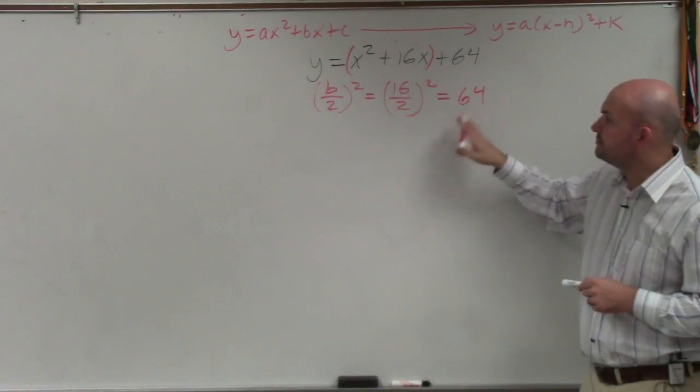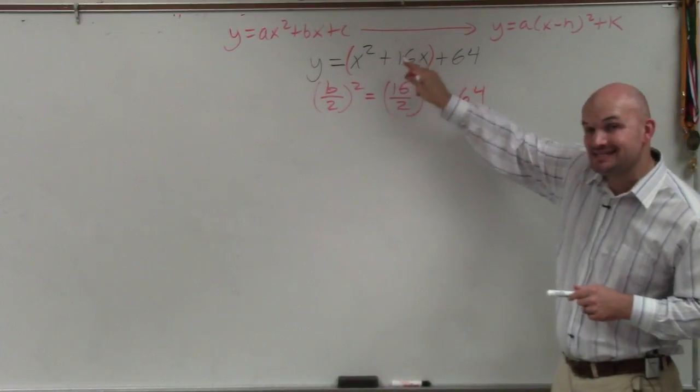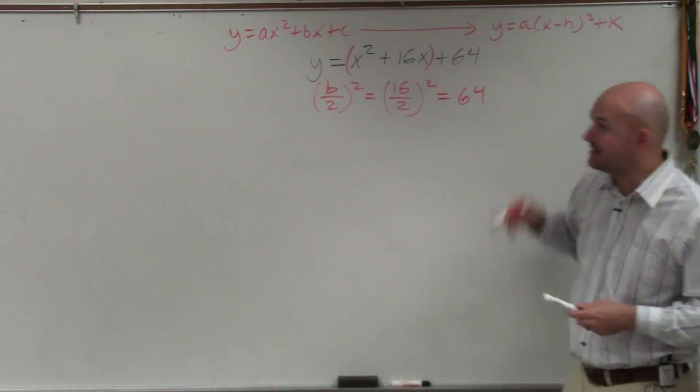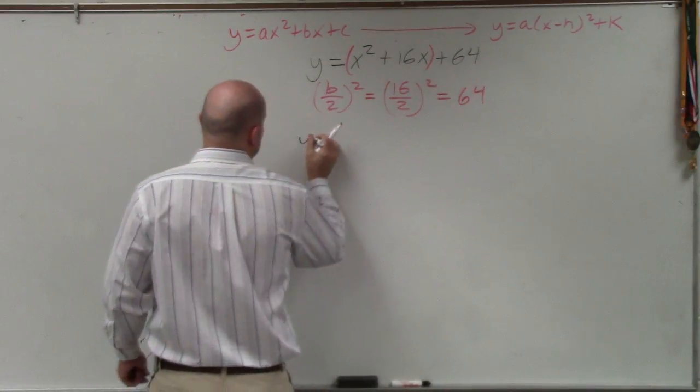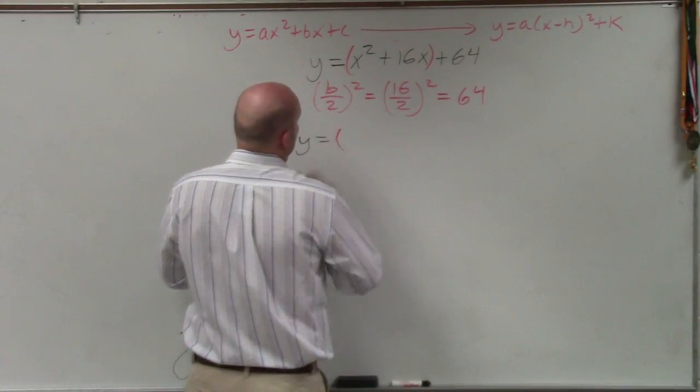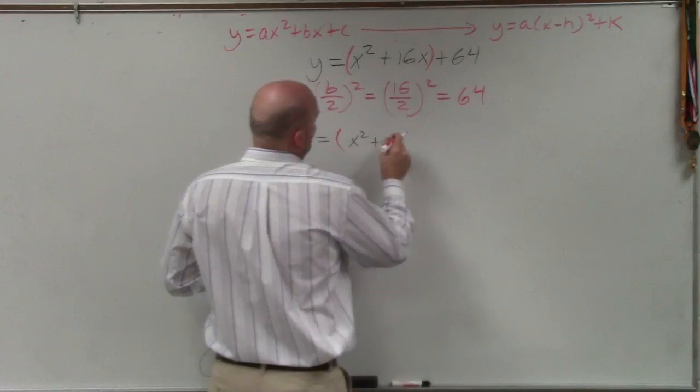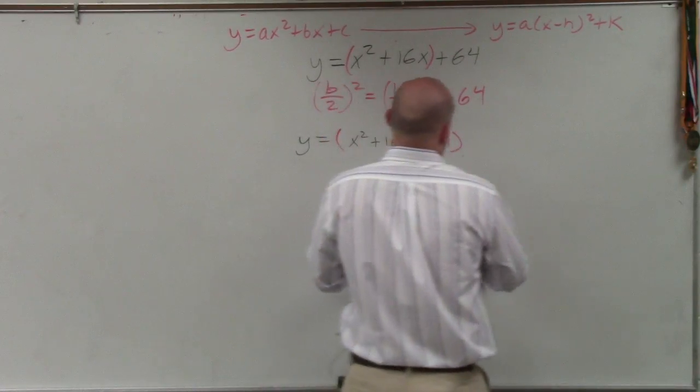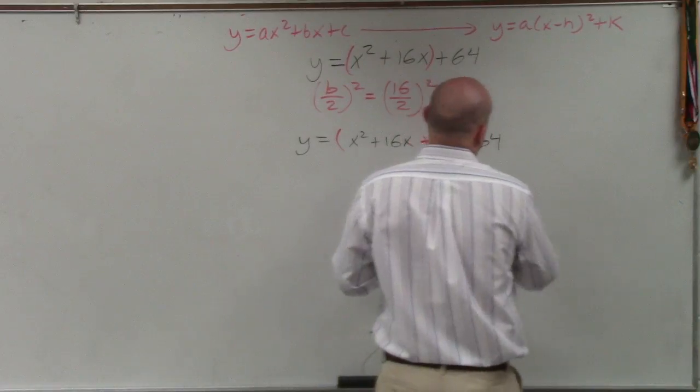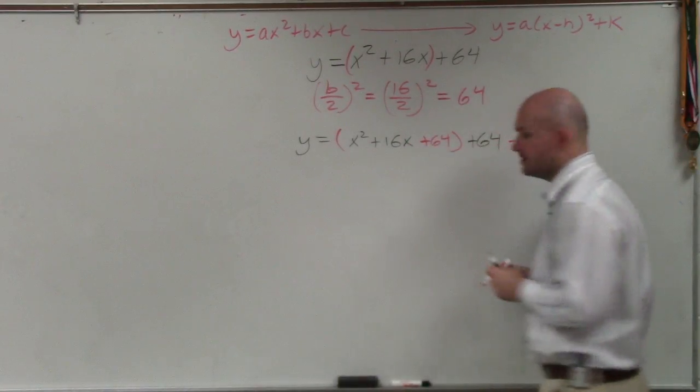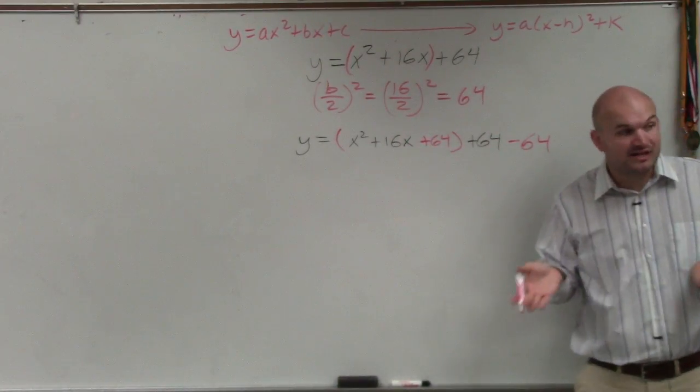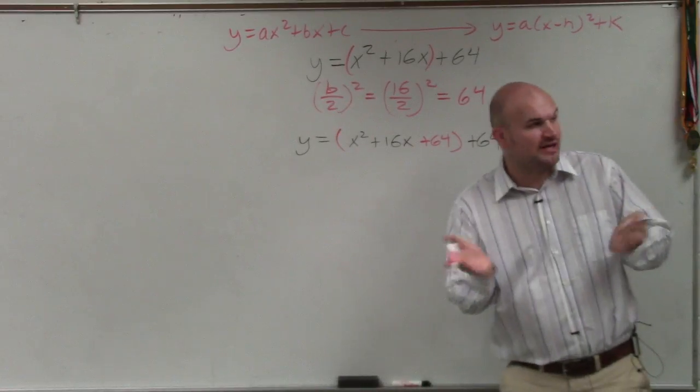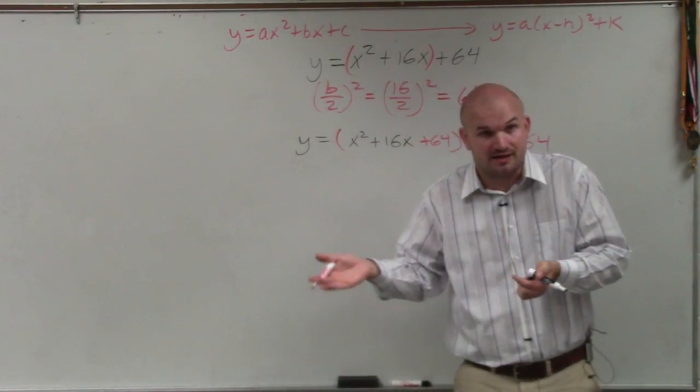So now, basically, what we're going to do is we're going to add that number inside of our parentheses, and then subtract it outside of our parentheses. That was the next step. So y equals x squared plus 16x plus 64, then plus 64, and then minus 64. So since you have an equation, you guys remember when you're solving equations, whatever you do on one side, you have to do on the other side.